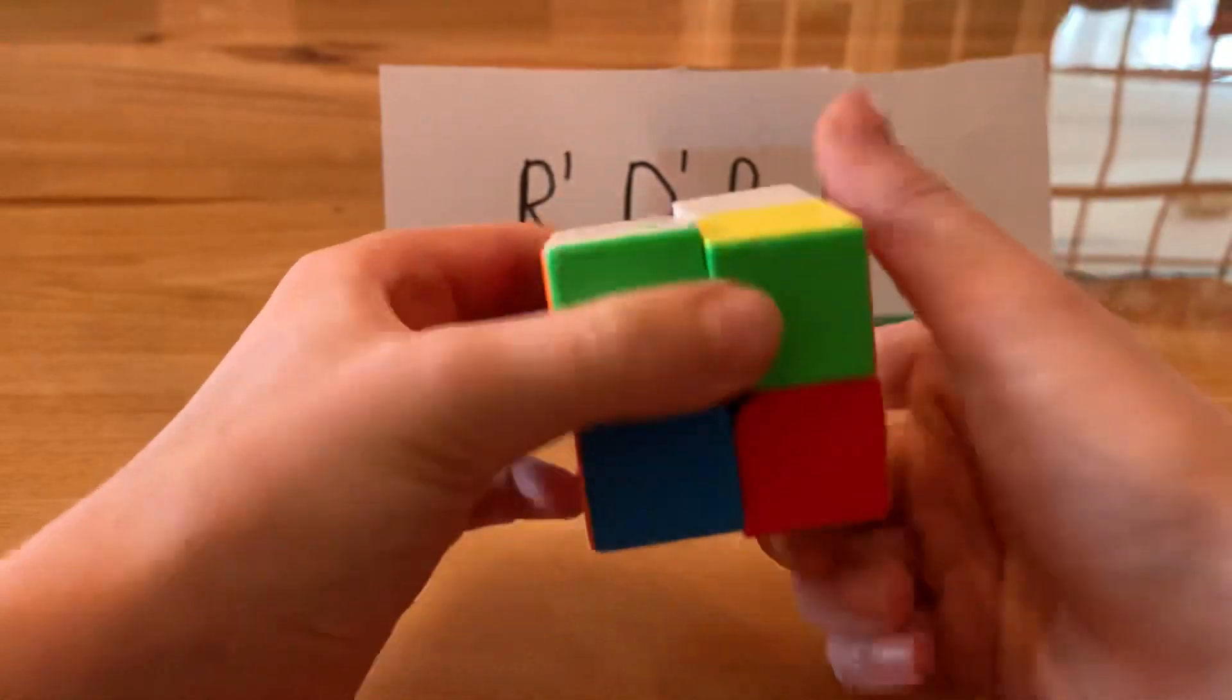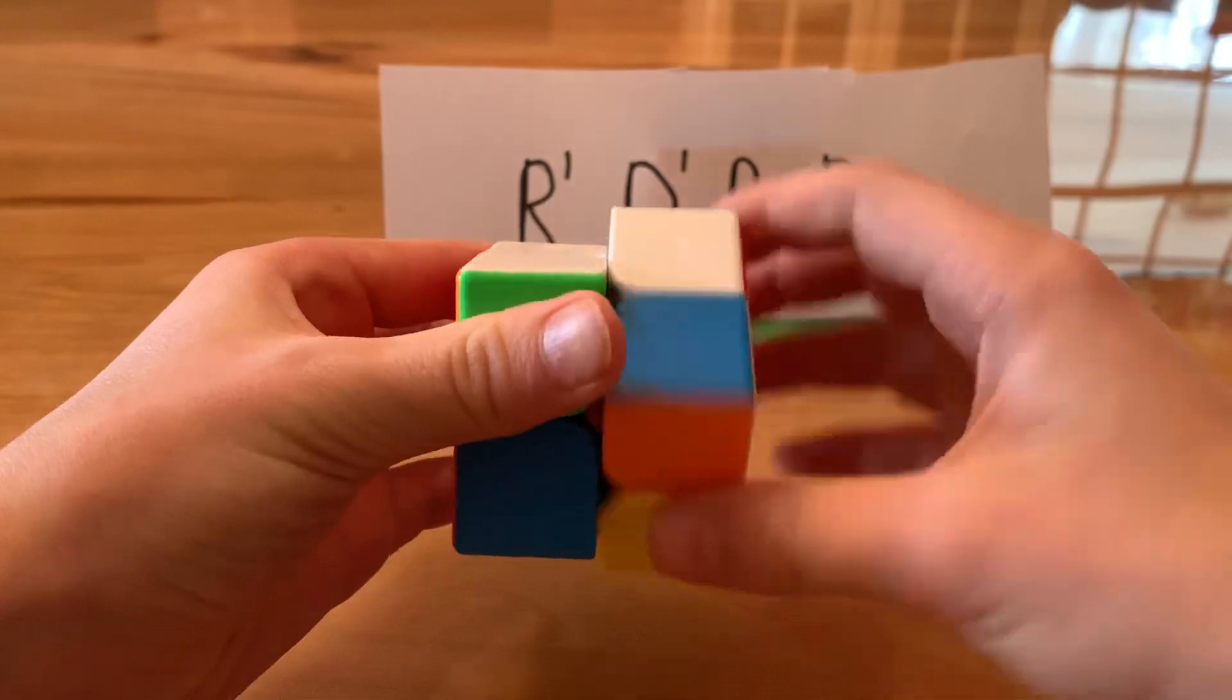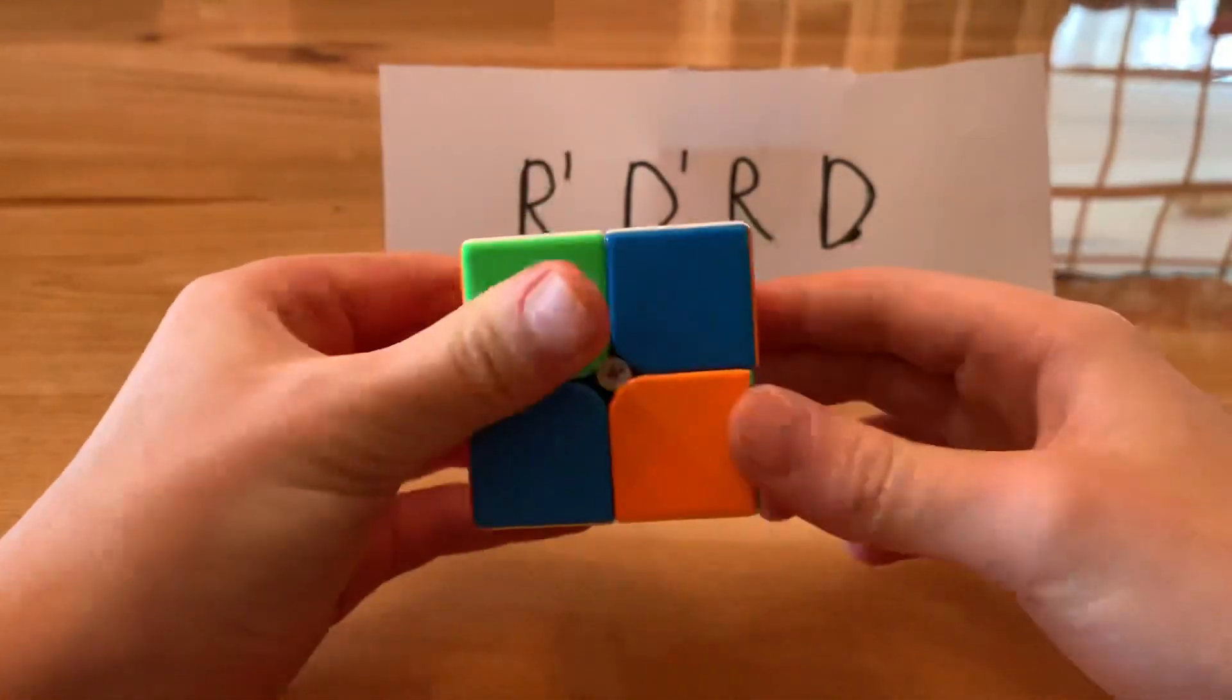R prime, D prime, R, D. Continue repeating this algorithm until the white face is eventually solved.